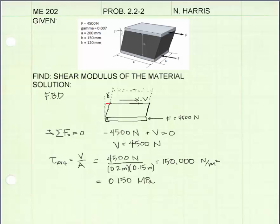Now you can see the shear force in this free body diagram is acting over this cut surface, which has a length of A, which is 200 millimeters or 0.2 meters. And the other dimension for this surface is B, which is 150 millimeters or 0.15 meters.